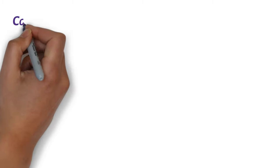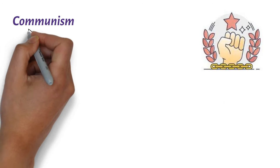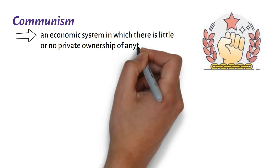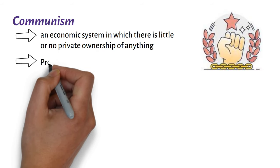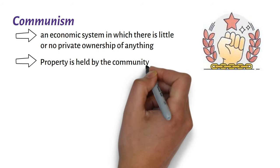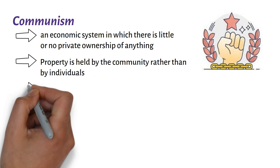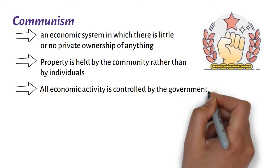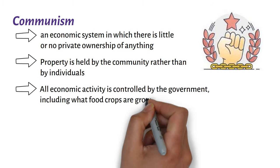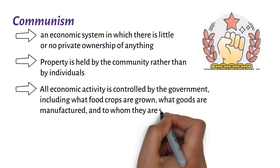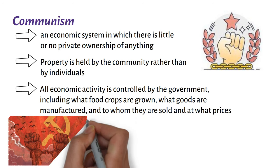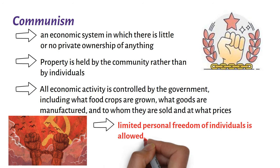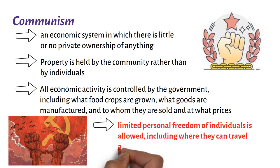On Communism. Communism is an economic system in which there is little or no private ownership of anything. Property is held by the community rather than by individuals. All economic activity is controlled by the government, including what food crops are grown, what goods are manufactured, and to whom they are sold and at what prices. Also, limited personal freedom of individuals is allowed, including where they can travel and how they spend their money.